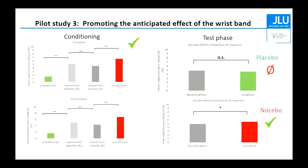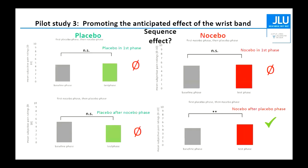What did we get? Again, conditioning looks good. No placebo effect in the direct test. A bit of a placebo effect overall, but being informed about the sequence effect from the second pilot, we analyzed data depending on sequence. Again, we only saw the placebo effect in the group who had received placebo intervention after the nocebo phase — not when they received placebo in the first phase. When they received placebo in the first phase, there was no effect.